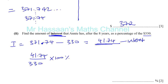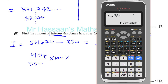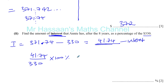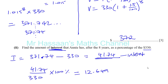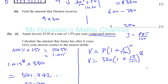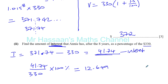Using the calculator value divided by 330, then multiplied by 100, gives 12.649, which is approximately 12.6%. That's the end of this part of the question — that's question one, parts A and B done.